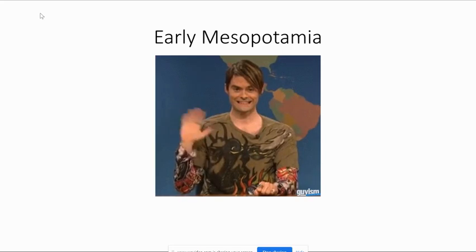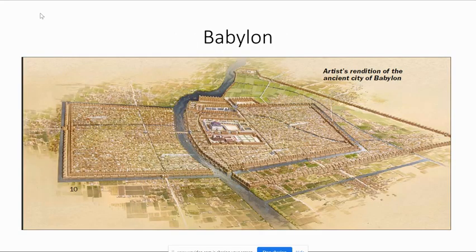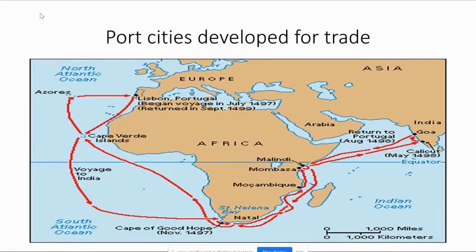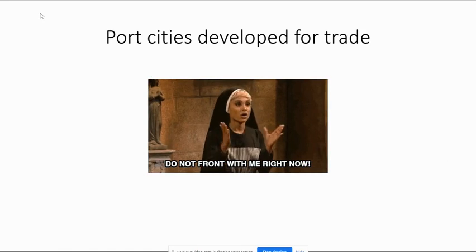Here's another one — an artist's rendering of Babylon, also in Mesopotamia. With this one you can see the river actually running through the settlement. Here's an example of settlements that developed as a result of being on a trade route — places along the coast that developed so people could resupply or merchants could trade goods and make money.